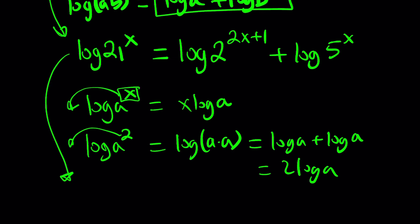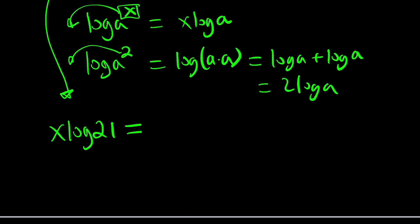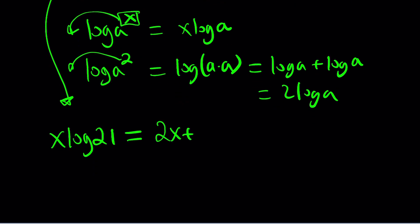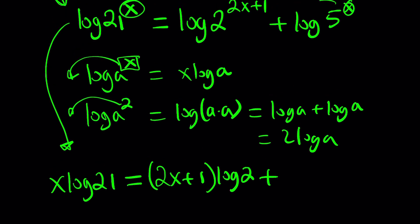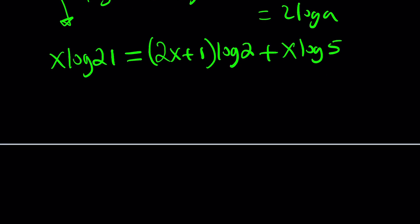Let's go ahead and see how we can bring these down. This first part is going to give us X times log 21. And then the second one is going to bring down the 2X plus 1, we're going to multiply by log 2. And then this one, we're going to bring the X to the front. It's going to give us X log 5. Now, this might look like not solvable to you at this point, but don't worry about it. We're going to find out.